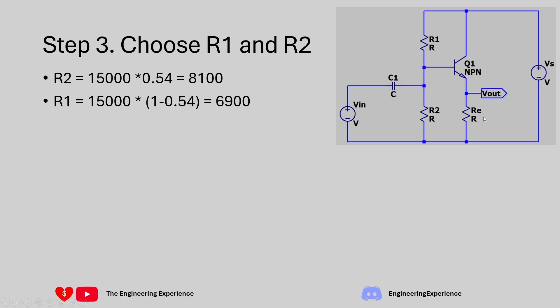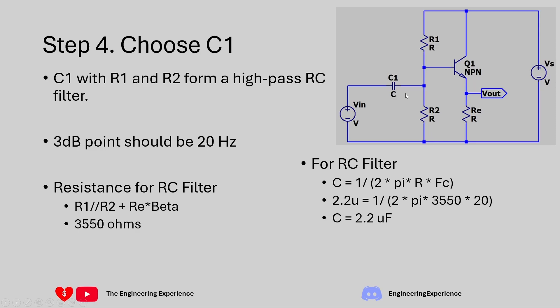So now we have calculated our RE, R1 and R2 values. We have also figured out how much current is going to go down this path, how much current is going to go down this path and how much current we need going down this path. The last thing to do is work out the value for C1.